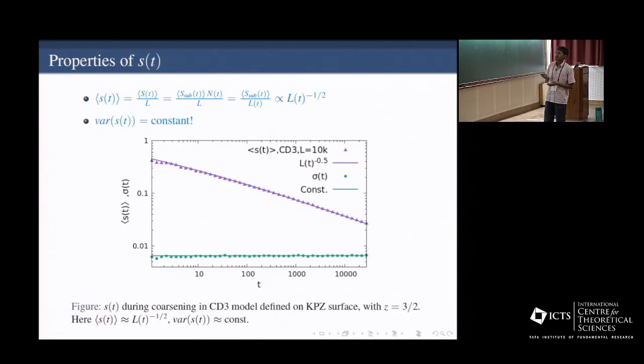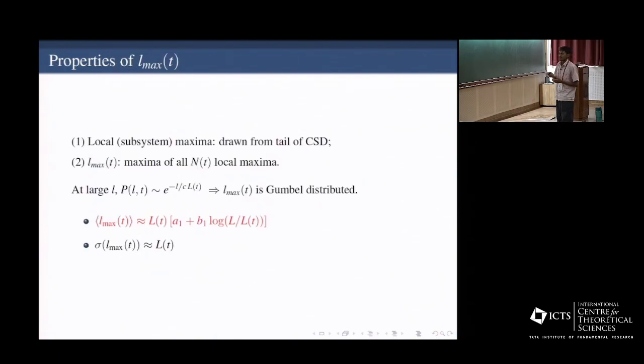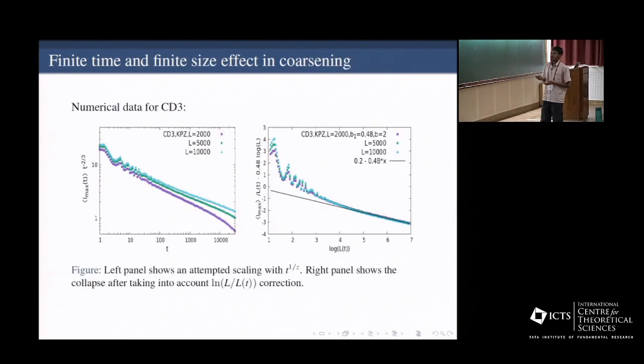And the consequence is the number of domain walls, the variance of it is constant in time. It is fluctuating but constant in time. And it turns out that the maximum cluster size has a logarithmic term in a leading order. And it is observed in simulation, so this is the largest domain size with time. So we try to attempt a simple power law scaling. It does not work, but you take into account the logarithms and it works nicely. So this is how these quantities behave in time.